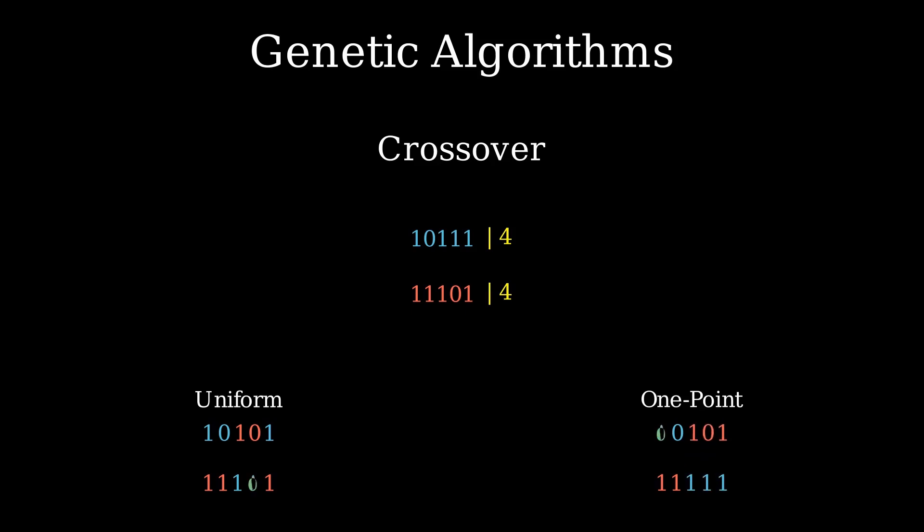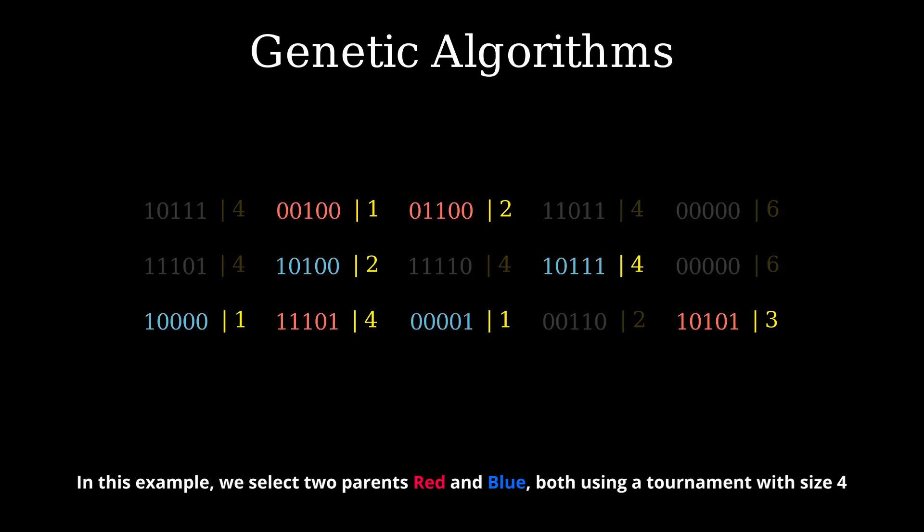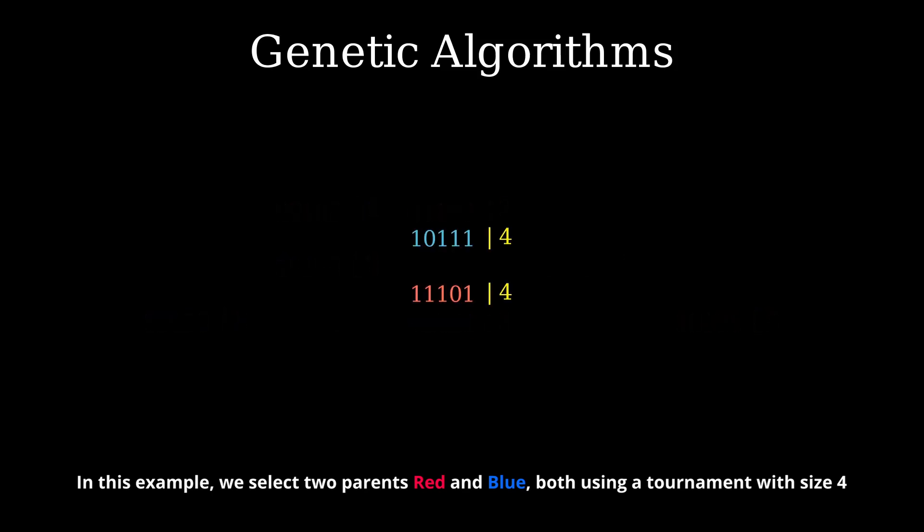Selection is often handled using tournaments. For every parent candidate, we select a small number of individuals and pick the best. If the tournament size is large, selection pressure is high, meaning that the best individual in the population will quickly dominate the gene pool.